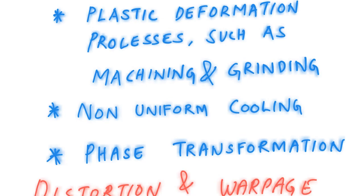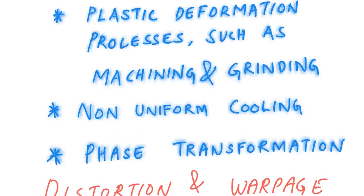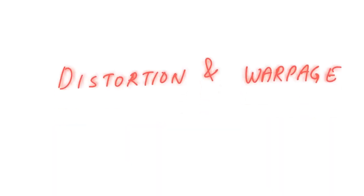Phase transformation is another source. If the product phase and the parent phase have different densities, there will be distortion, warpage, or residual stresses generated in the material. A good example is martensite formation: when you suddenly cool from the gamma austenite phase to martensite, their densities are different, and if not done properly there is a good chance internal stresses will be generated — that's why you perform tempering and other heat treatment processes.